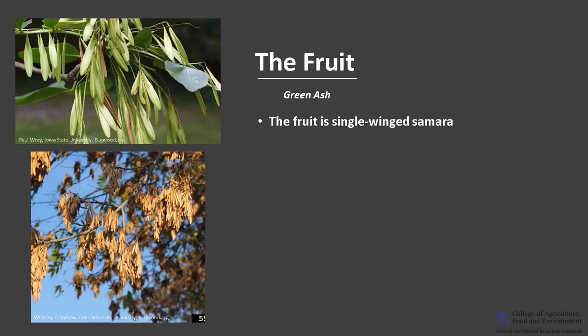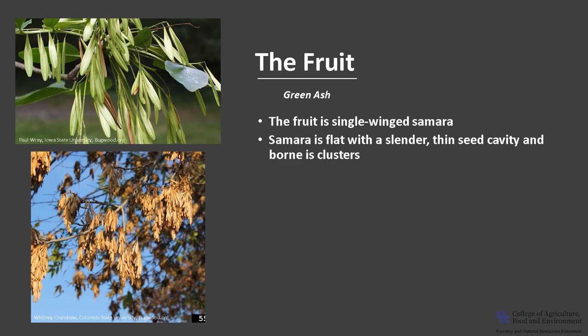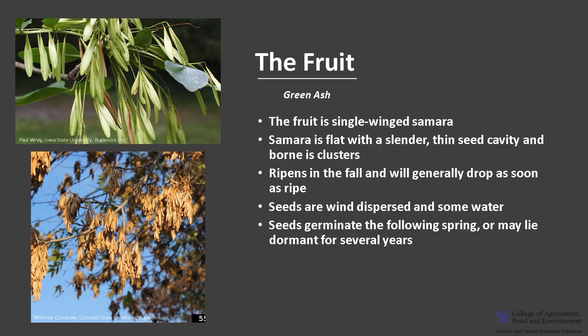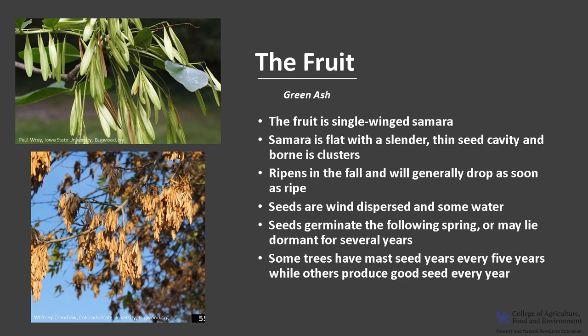The fruit of green ash is a single-winged samara. The samara is flat with a slender thin seed cavity, and the samaras are borne in clusters. The fruit ripens in the fall and will generally drop as soon as it ripens. Most of the seeds are wind dispersed, but some may also be dispersed by water. Seeds will germinate the following spring or may lie dormant in the leaf litter for several years. Many ash trees exhibit masting behavior, producing very abundant seed crops every five years, while others produce good seed crops every year. Green ash also regenerates from stump sprouts.